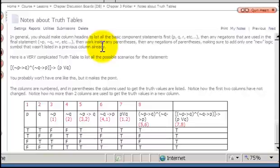In general, you should make column headings to list all the basic component statements first. In another video we talked about how that's going to determine the number of scenarios or rows that you have to have in your truth table.